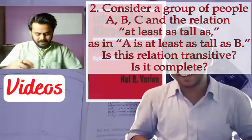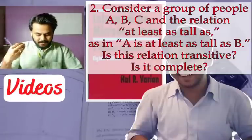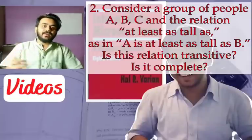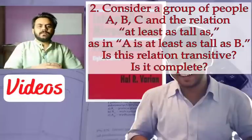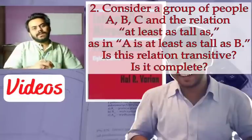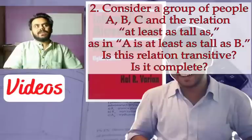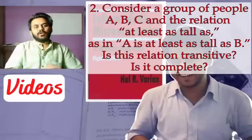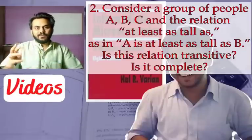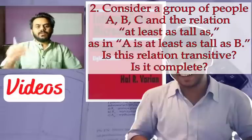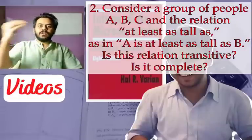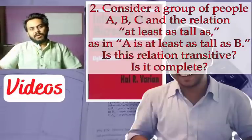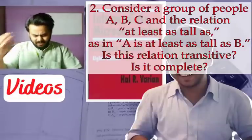Now, is the relation 'at least as tall as' complete? Complete means can we compare all possible pairs — can we have this relation identified for all sets of people? Yes, because you will always be either taller or equal in height. So at least as tall as — yes, it's complete.